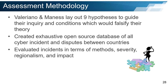Assessment Methodology. Valeriano and Maness developed their theory of cyber conflict based on regionalism, rivalry, and restraint. The authors then lay out nine hypotheses to guide their inquiry and list specific conditions which, if met, would falsify their theory. In order to test their theory, the authors created an exhaustive open source database of all cyber incidents and disputes between states — this data set is online and available to explore. Based on this data set, the authors evaluated their hypotheses in terms of methods, severity, regionalism, and impact. While you may not necessarily agree with every conclusion Valeriano and Maness reached, the most important aspects of their approach are their adherence to the scientific method and the transparency of their approach. This allows you, as a fellow researcher, to evaluate their method and results and draw your own conclusions.